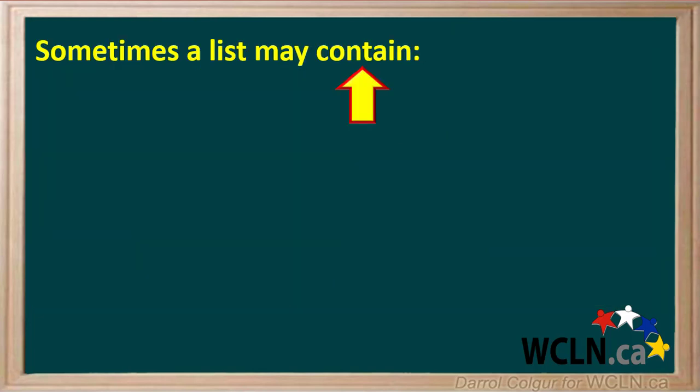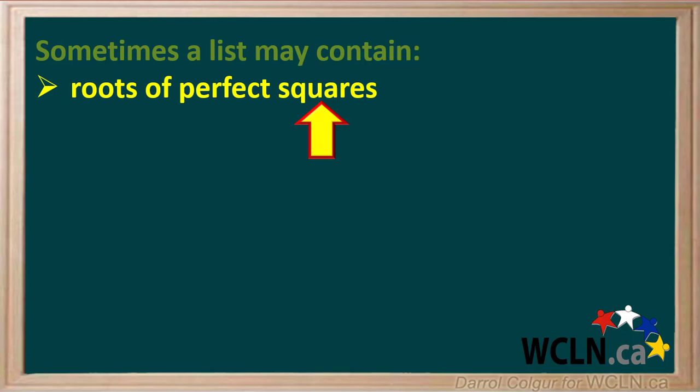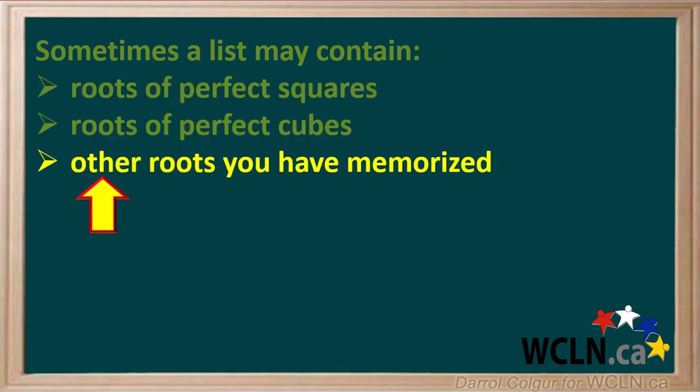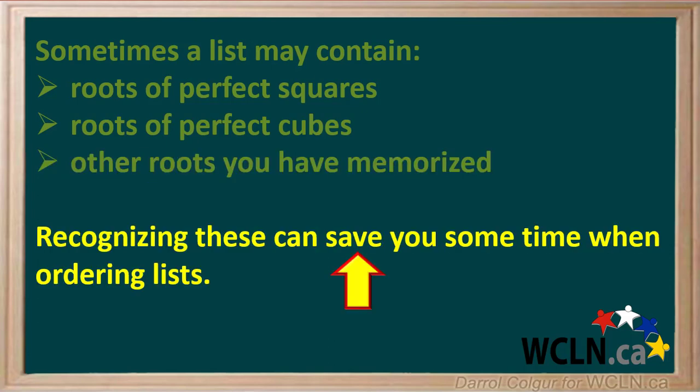Sometimes a given list may contain roots of perfect squares, roots of perfect cubes, or other roots you may have memorized, such as the 4 through 16, etc. Recognizing these can save you some time when ordering lists — for these, you don't need to use a calculator.